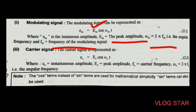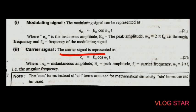This is the basic equation of the modulating signal. In a similar way we can write the carrier signal equation. The carrier signal is represented as e_c = E_c cos(ω_c t).